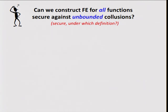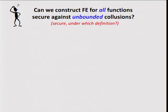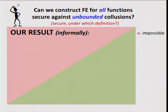The natural question is: can we actually construct functional encryption for all circuits for unbounded collusions — no prior bound on the number of secret keys an adversary can get — and if yes, under which definitions? Our results are going to fall in the impossible category; in particular, we're going to rule out a whole bunch of definitions for functional encryption for unbounded collusions.